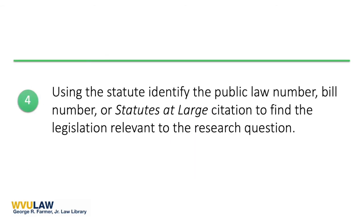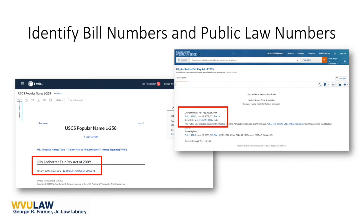In step four, we identified a critical piece of information for beginning legislative history research as the descriptive information for the statute. You will need the bill number, the public law number, and/or the statutes at large citation to get started. As an example, we will use the Lilly Ledbetter Fair Pay Act of 2009. If this is the starting point for my research, then my best course of action is to use the popular name table to locate the identifying information I need about the law to begin my legislative history research.